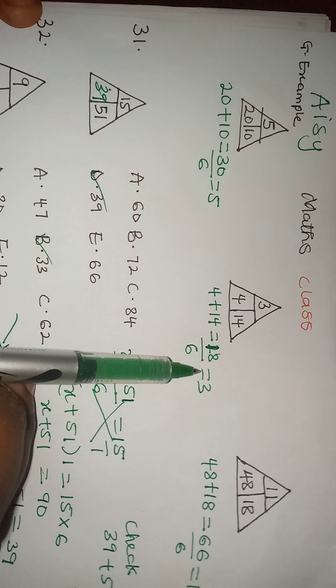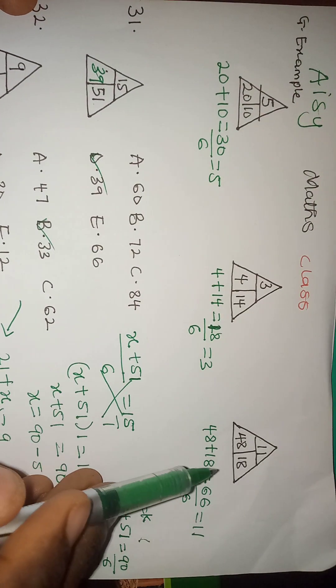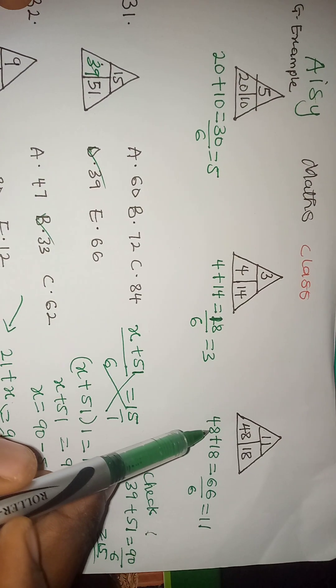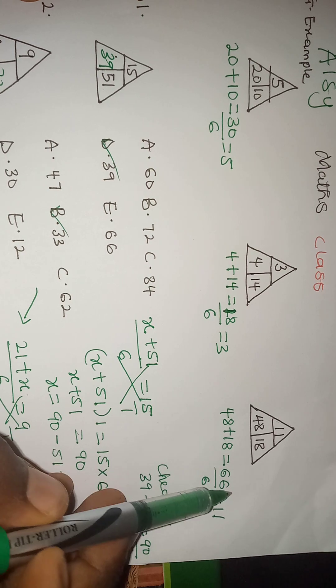Then here also 48 plus 18 which is 66, I divided by 6 which I got 11.